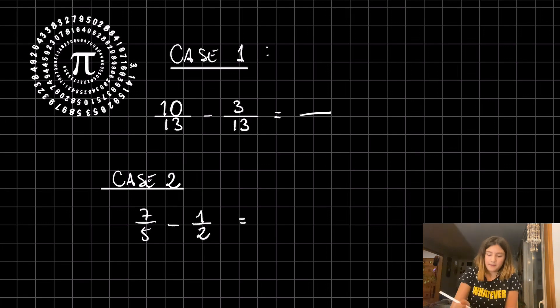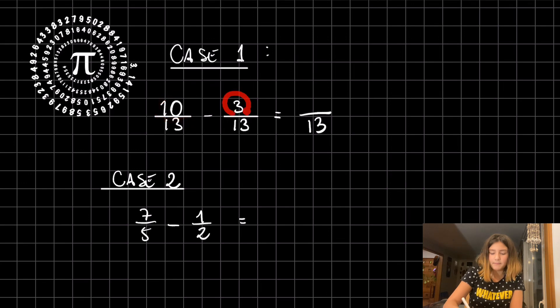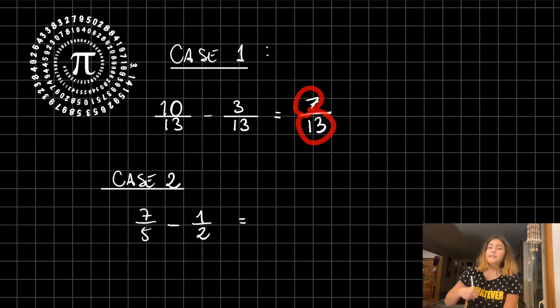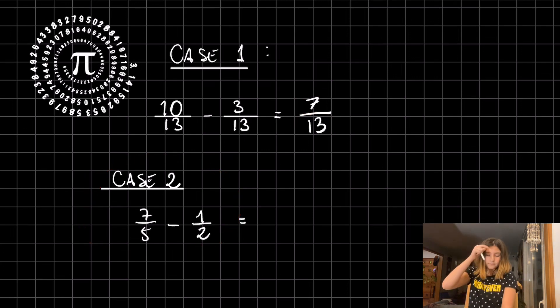Then the one on top is 10 minus 3, and 10 minus 3 is 7. And here we have the answer, seven thirteenths. Let's go to case two.